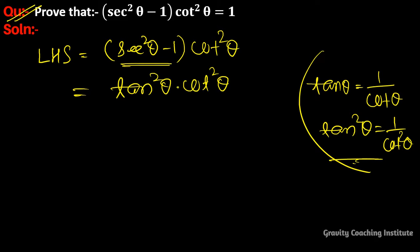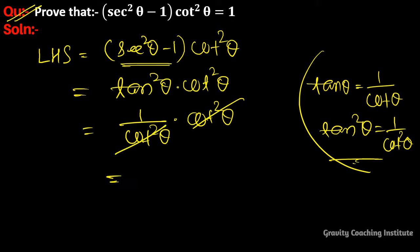Substituting, we get (1/cot²θ)·cot²θ. The cot²θ cancels, leaving 1, which equals RHS. Hence proved.